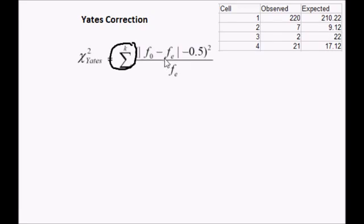So I have got my observed minus the expected and that is the absolute value. So for cell 1, absolute value, 220 minus 210.22.